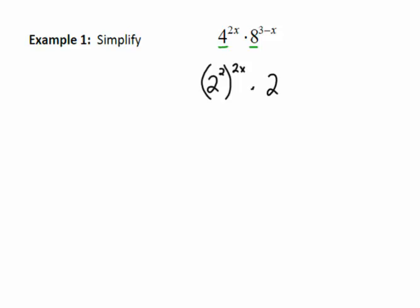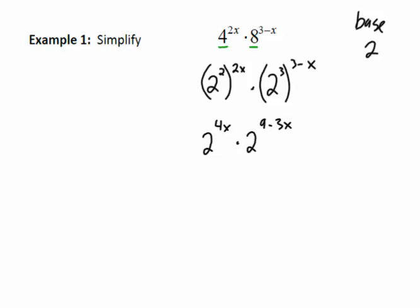We can write 8 as 2 cubed, keeping the original exponent 3 minus x. Now our bases are both base 2. We use our rule for exponents to simplify: multiplying the exponents gives us 2 to the 4x times 2 to the 9 minus 3x. Since we are multiplying values with the same base, we add the exponents: 4x plus 9 minus 3x. Our simplified expression is 2 to the x plus 9.